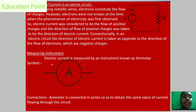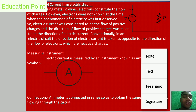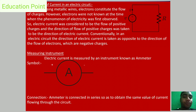The ammeter is always connected in series in the circuit. This is because we need to obtain the same value of electric current flowing through the circuit. By connecting it in series, the same current passes through the ammeter, giving us the correct measurement.